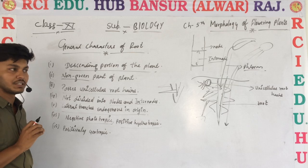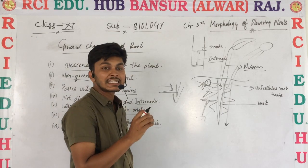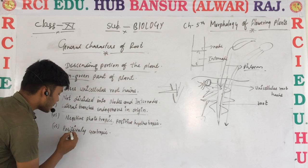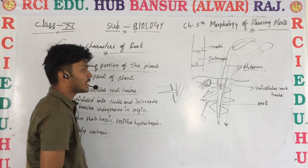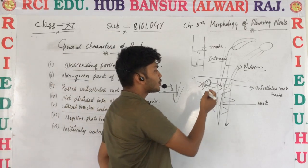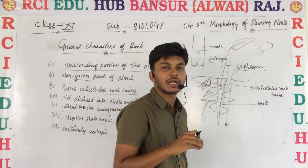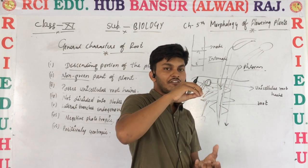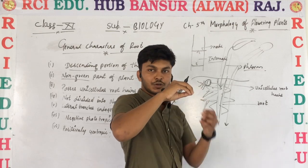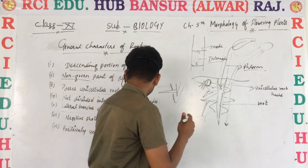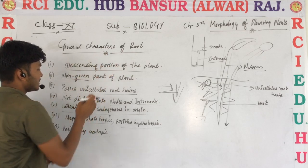Roots are positive geotropic — they always grow toward the center of gravity, attracted by gravitational force automatically. That is the last feature of the roots.